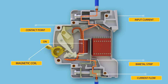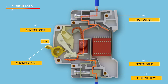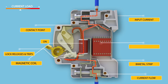Under overload condition, the current through the bimetallic strip causes a rise in its temperature. The heat generated within the bimetallic strip is enough to cause deflection due to thermal expansion of metals. This deflection further releases the trip latch and the contacts get separated. The visual indication of this trip can be observed by automatic movement of the operator to the off position.